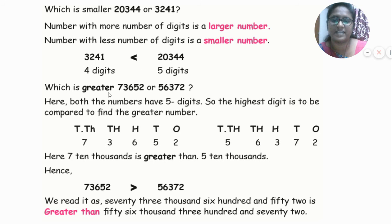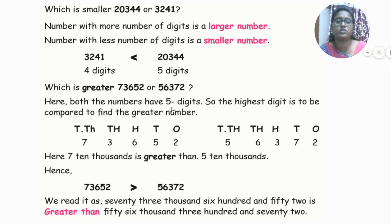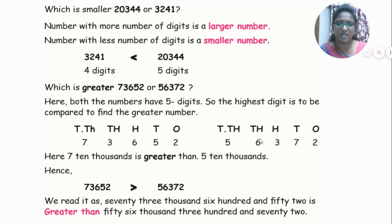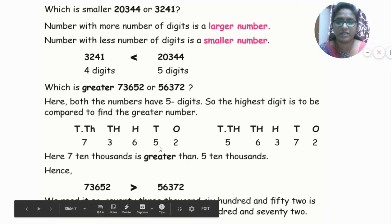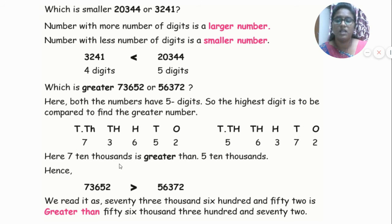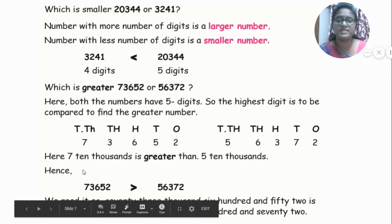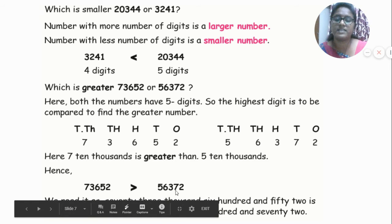Here we look at the ten-thousands place: one number has 5 there, the other has 7. Since 7 is greater, 73,652 is greater than 56,372. The open wide side of the symbol faces the greater number: 73,652 is greater than 56,372.